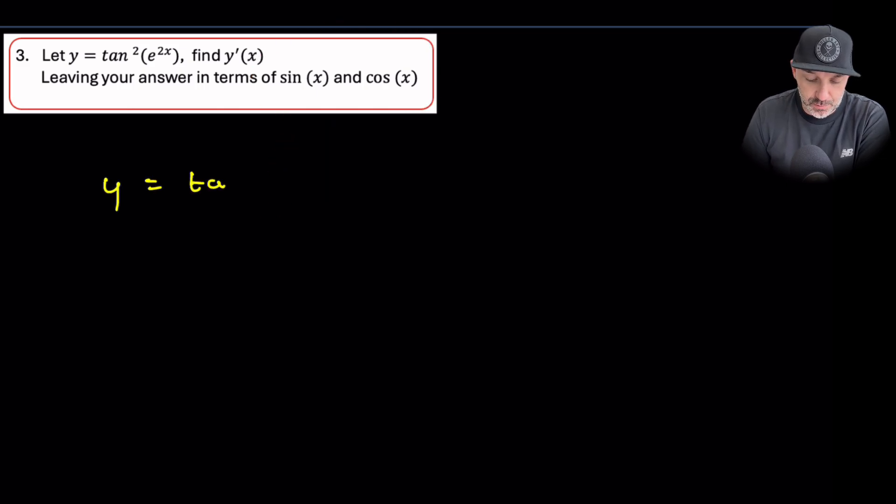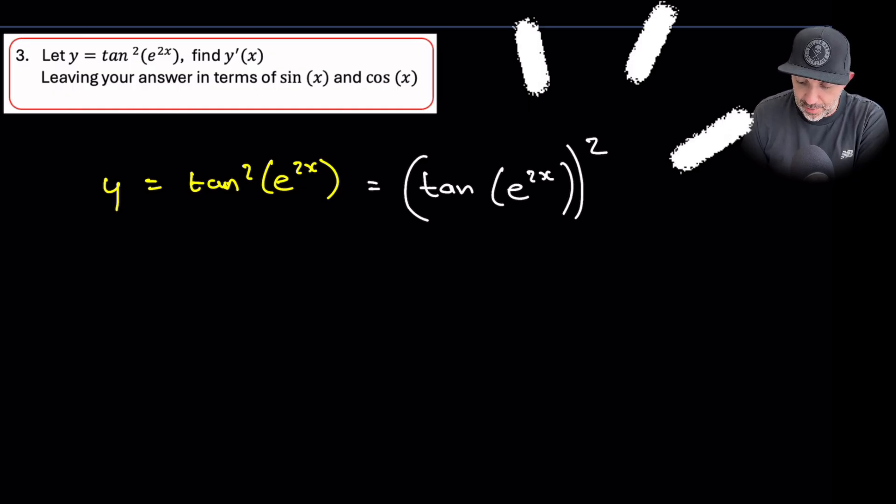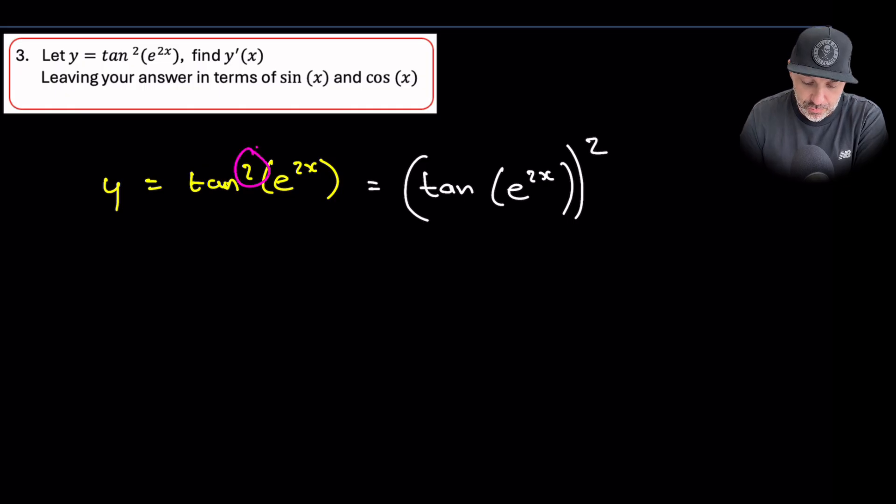So if y is equal to tan squared e to the 2x, another way of writing that might be to write down that it's just simply tan e to the 2x all squared. Because when we have a trig function, if the squared is there, what it's really meaning is that you're squaring the entire function.